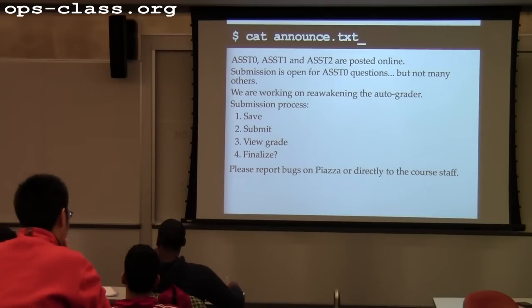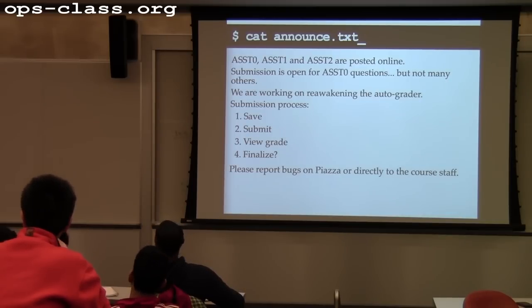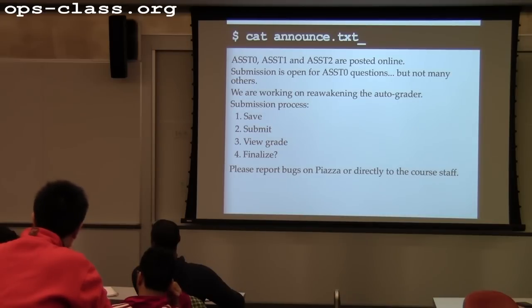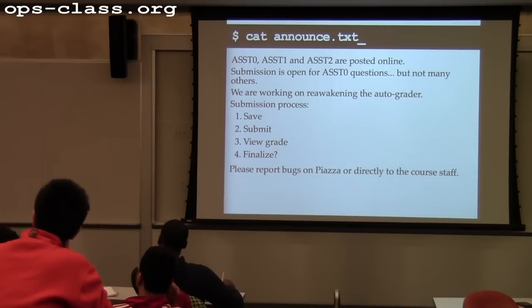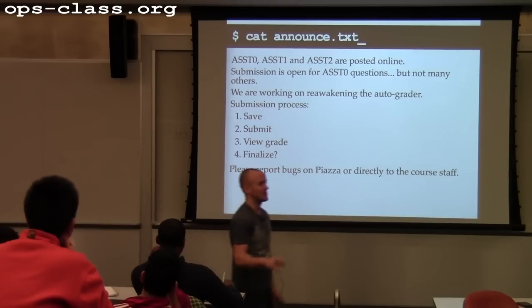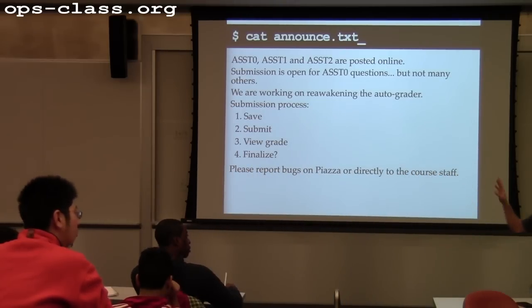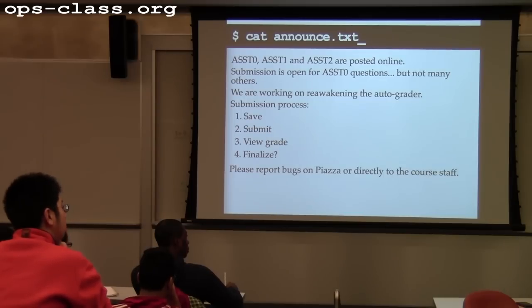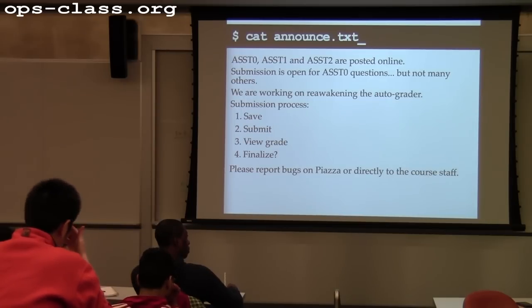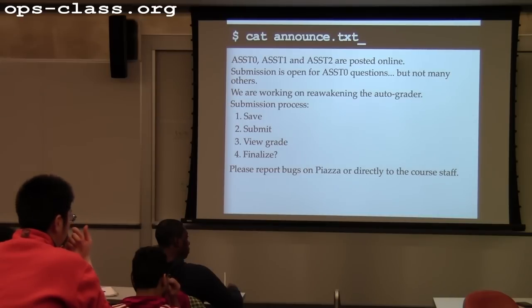Once your questions are graded, you'll have a chance to look at your score. For some code reading and design documents, we may give you two shots — here's the answer you submitted, here's the grade we assigned. If you'd like to keep that grade, you can finalize your score, which will show you the correct answers. We won't give you six or ten tries on code reading questions, so it might be just two.